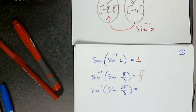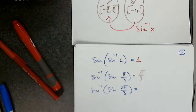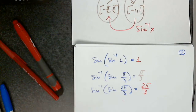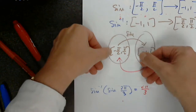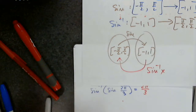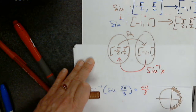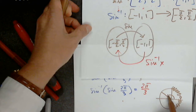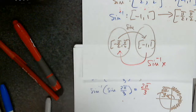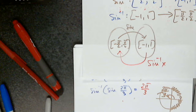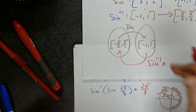I know that sine inverse cancels sine, and sine cancels sine inverse. But writing 2 pi over 3 as the answer will be a mistake. Why? Sine has to be applied anywhere between negative pi over 2 and pi over 2. But 2 pi over 3 is outside that range — it's 120 degrees. The domain for sine inverse is between negative pi over 2 and pi over 2, so I cannot use the inverse property here.